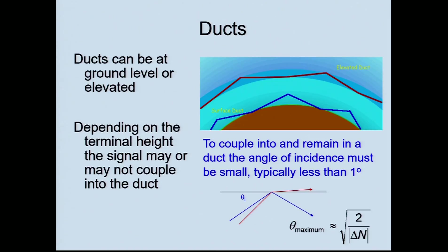Not only does the signal have to couple into the duct, but it needs to remain in the duct as well. Ducts are not perfectly smooth. They also have a particular height. Very low frequencies are basically too big to get into the duct. Very high frequencies will get scattered out by the rough edges. So there is an optimum frequency which will propagate — which just so happens to be UHF. This is why you get ducting more at 70 centimetres than at 2 metres. It's good at 23 centimetres, but as you go up into the high gigahertz regions, it becomes less common.